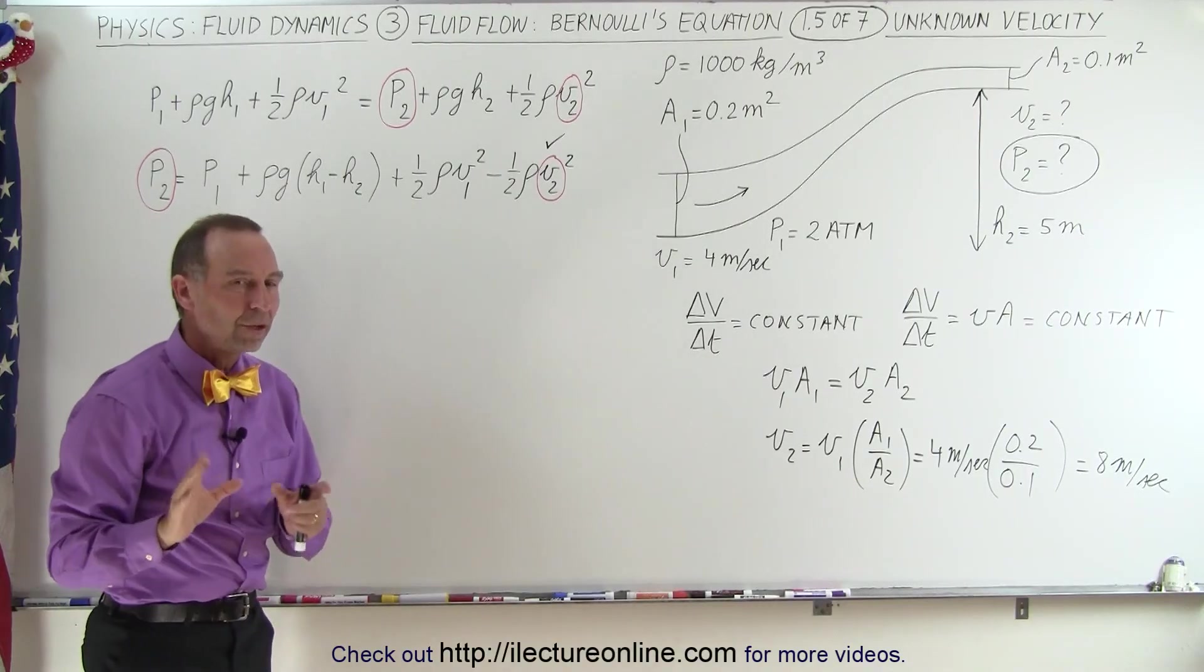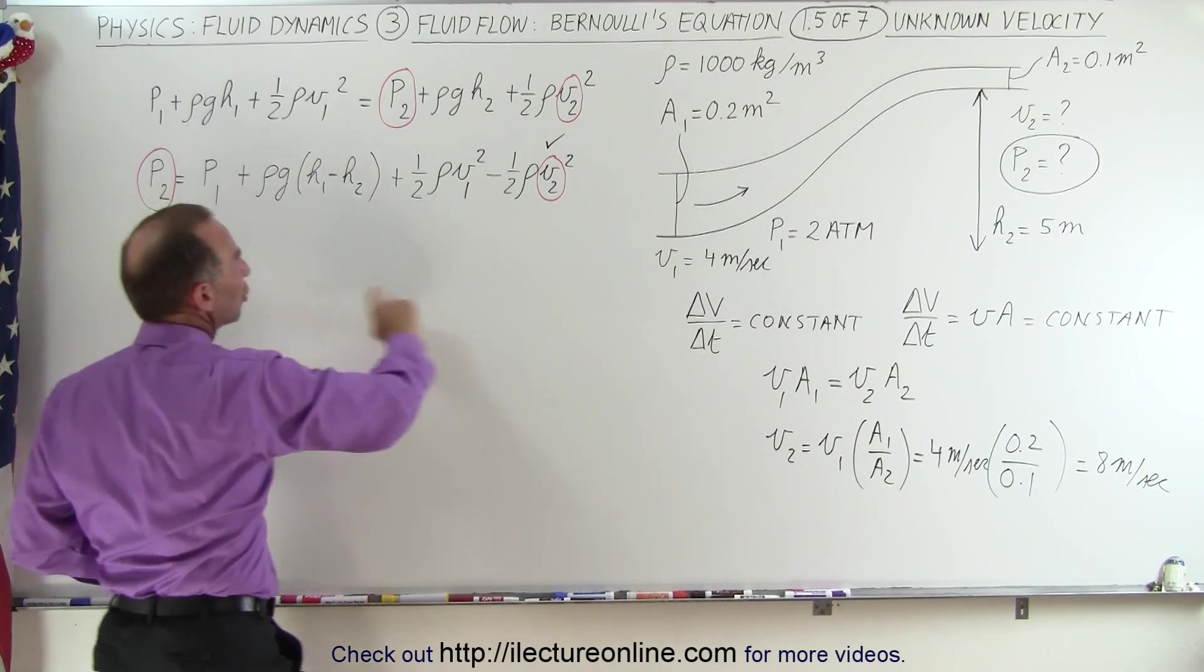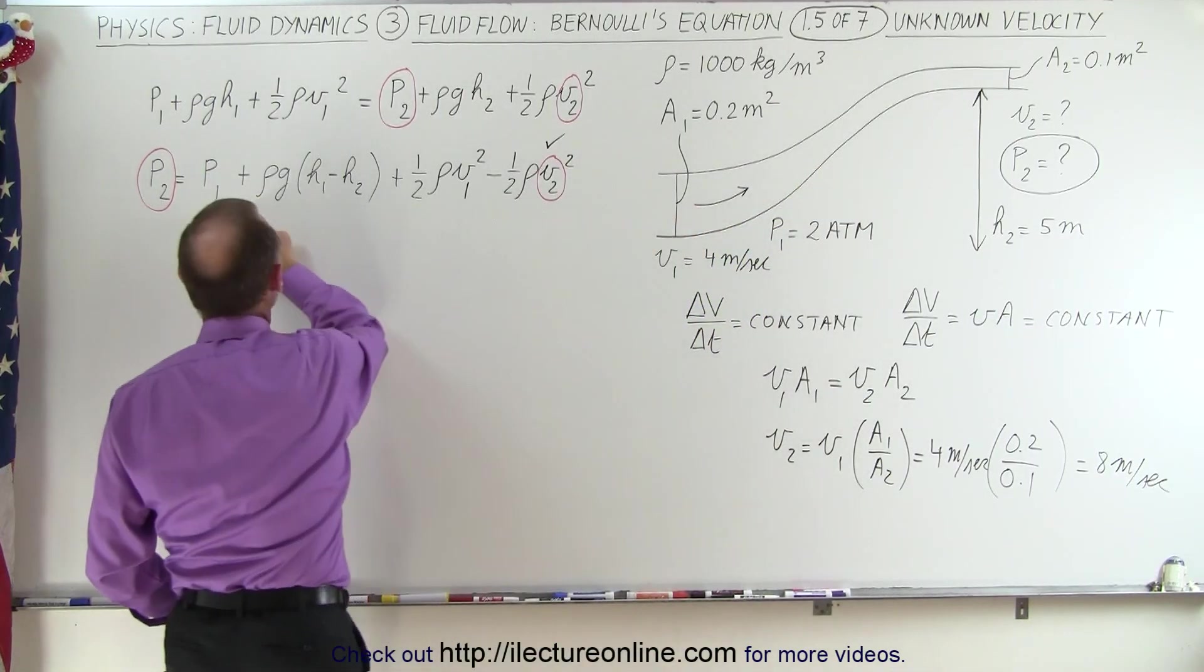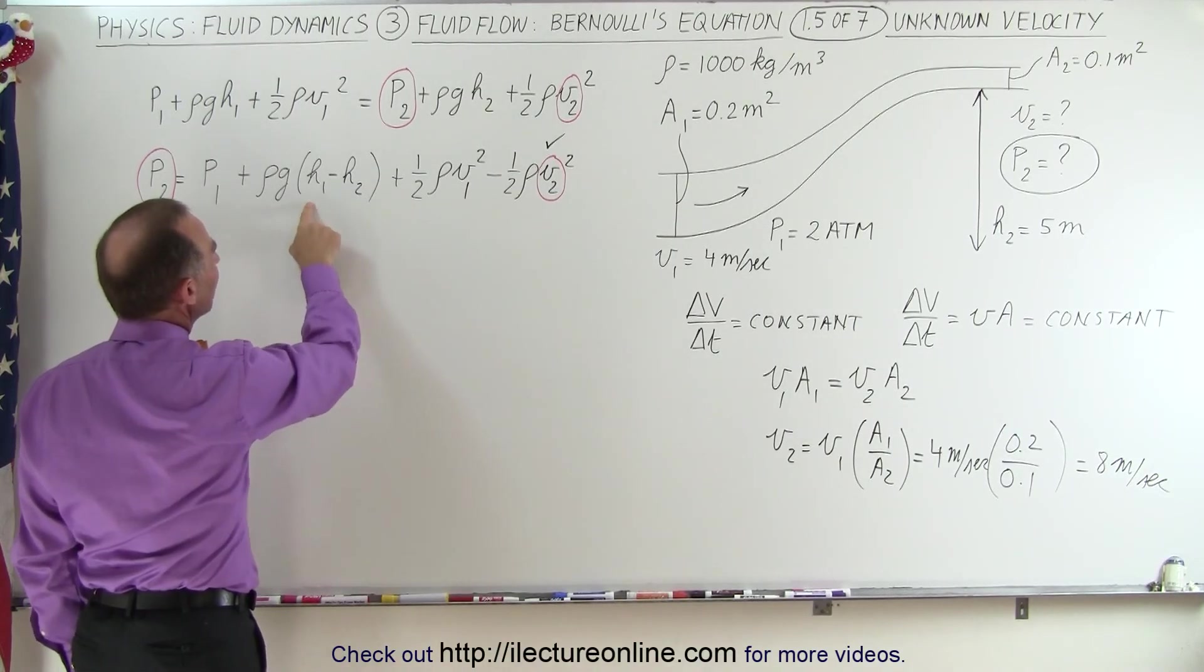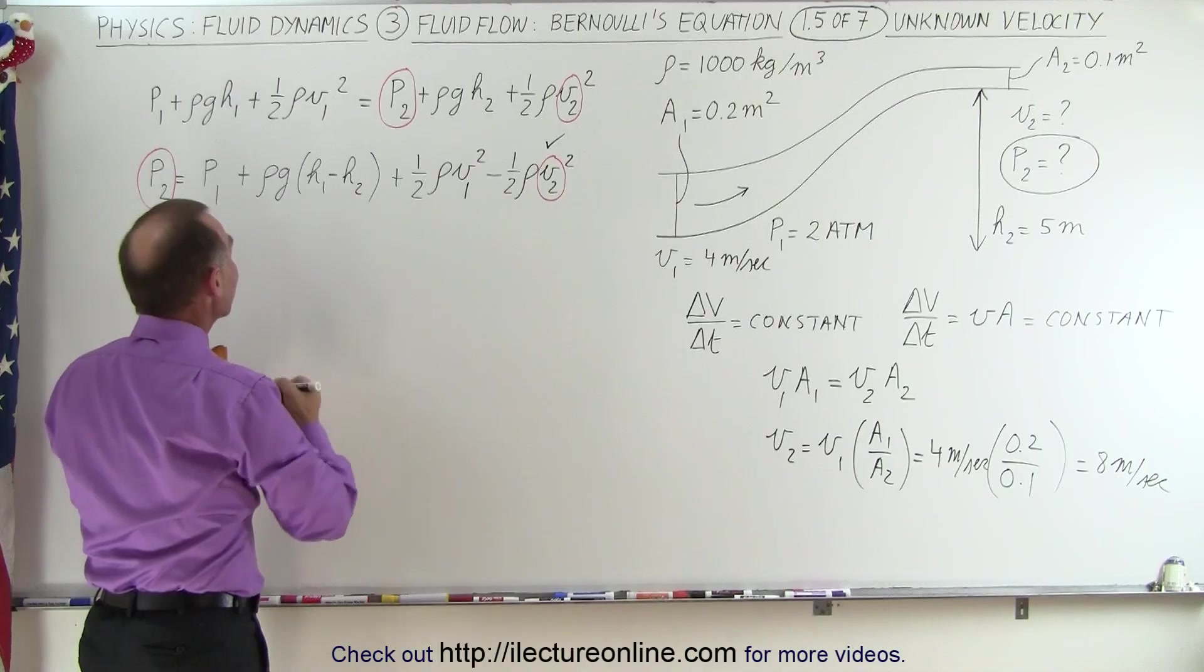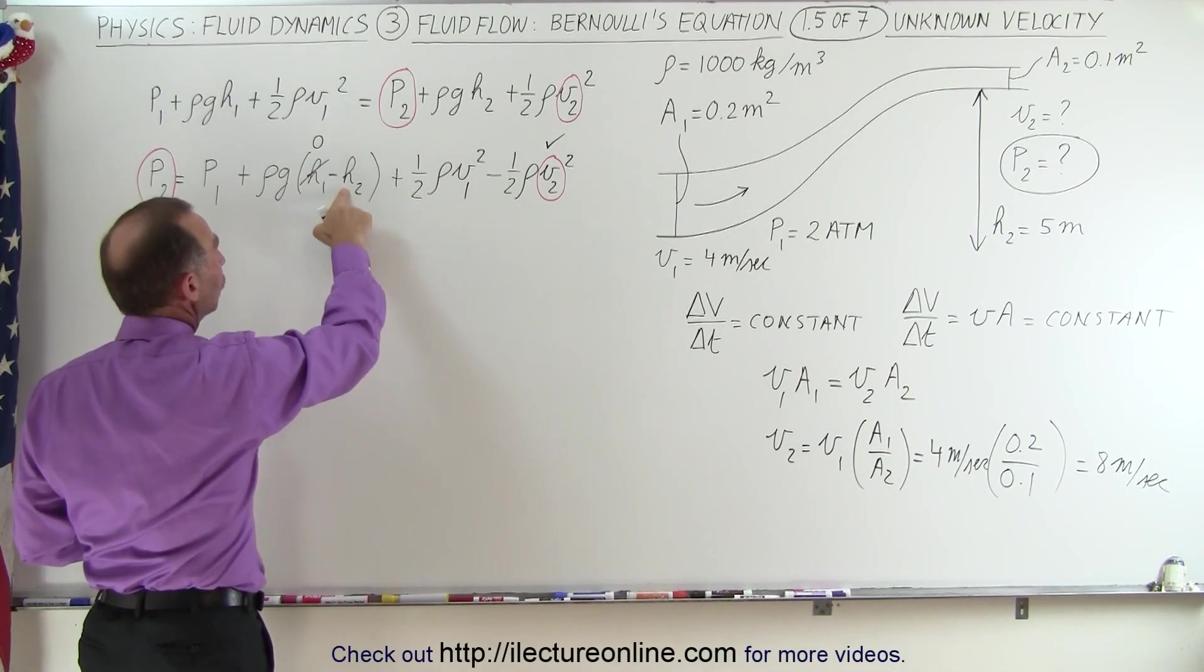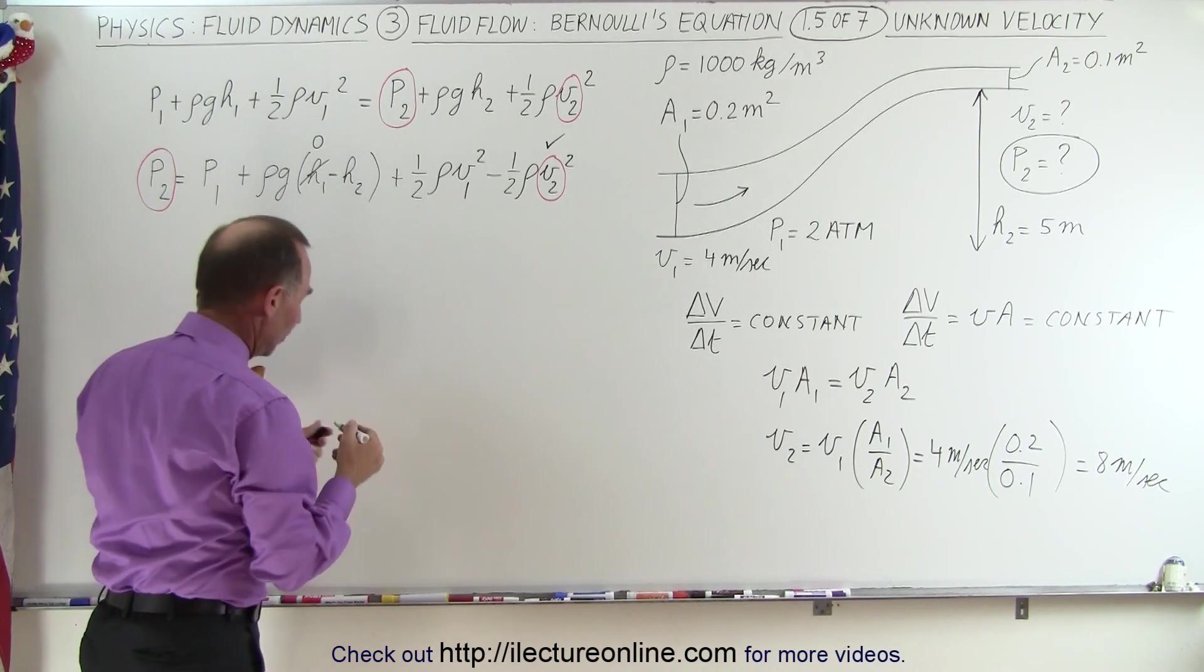Now notice what happens because we have the signs to contend with. Notice that the pressure at 2 will be equal to the pressure at 1 plus this term right here. We'll take each term at a time. So here we can see that since h1 can be considered to be 0, just call that 0, and h2 is 5 meters higher, this becomes minus 5 so this becomes a negative term.